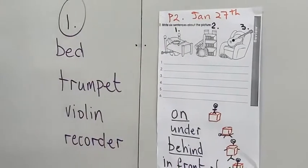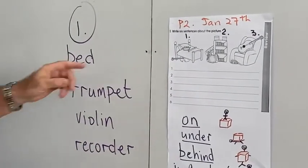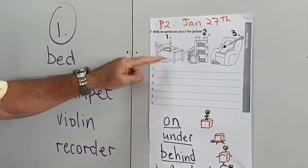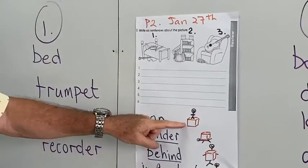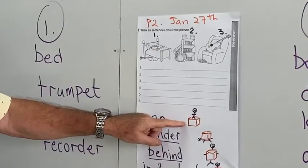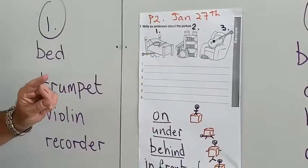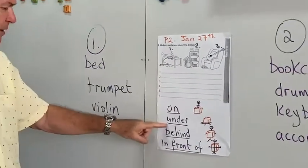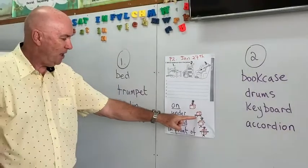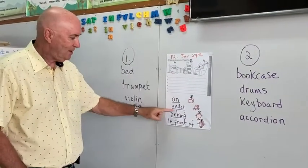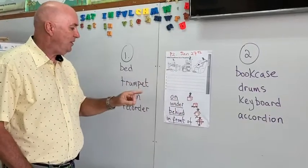So we're going to say, where are they? Where's the trumpet? The trumpet is on the bed, or the recorder is on the bed. Where's the violin? The violin is under the bed.